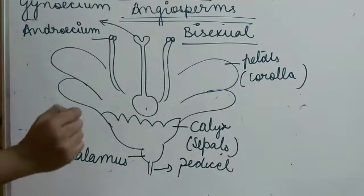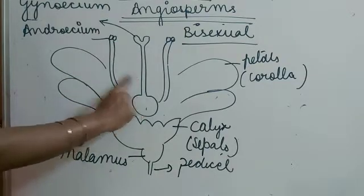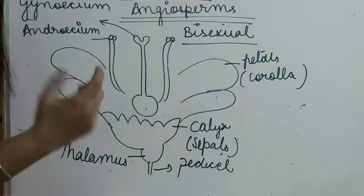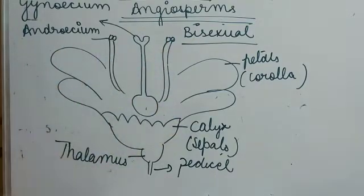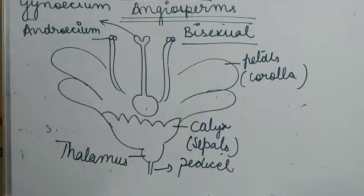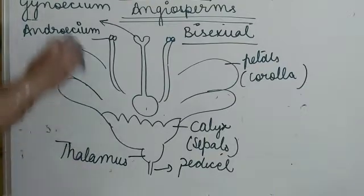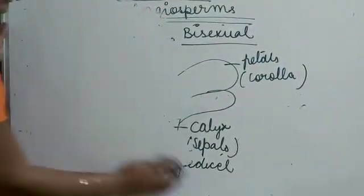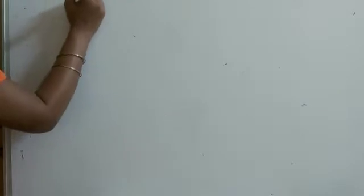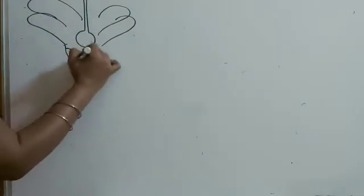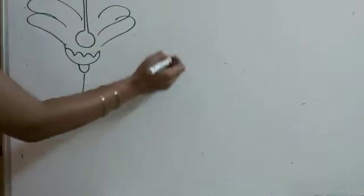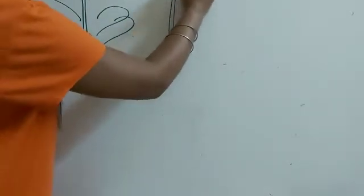If a flower has only the androecium — the male part — or only the gynoecium — the female part — that means only one sex is present. We call such a flower a unisexual flower. So in a unisexual male flower there is only the androecium, and in a unisexual female flower there is only the gynoecium. The petals, sepals, and thalamus may still be present in both types.